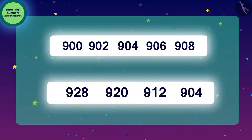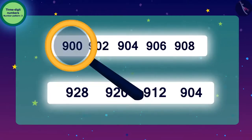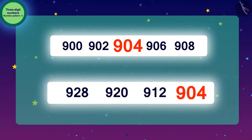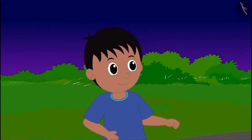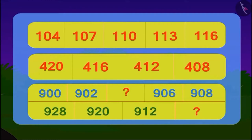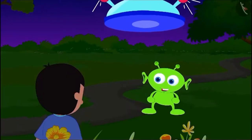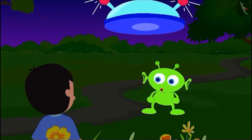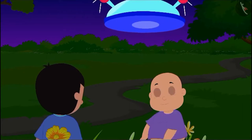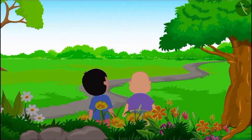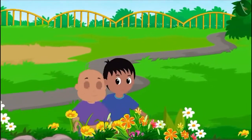Our second pattern is also complete. Looking at both patterns together, 904 is the number that fits in both. So, the answer to the alien's last code is 904. Raju quickly answered the alien. The alien confirmed: you have given correct answers to all three codes; I am returning your friend to you. Bablu came down from the flying saucer, it flew away, and Raju and Bablu happily went home.